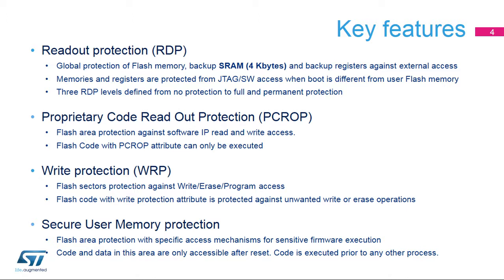Readout protection, or RDP, is a global mechanism that prevents external read access to flash memory, the 4 kilobytes of backup SRAM, and backup registers. An external access can be gained by using a JTAG connector, a serial wire port, or the boot software embedded in SRAM.